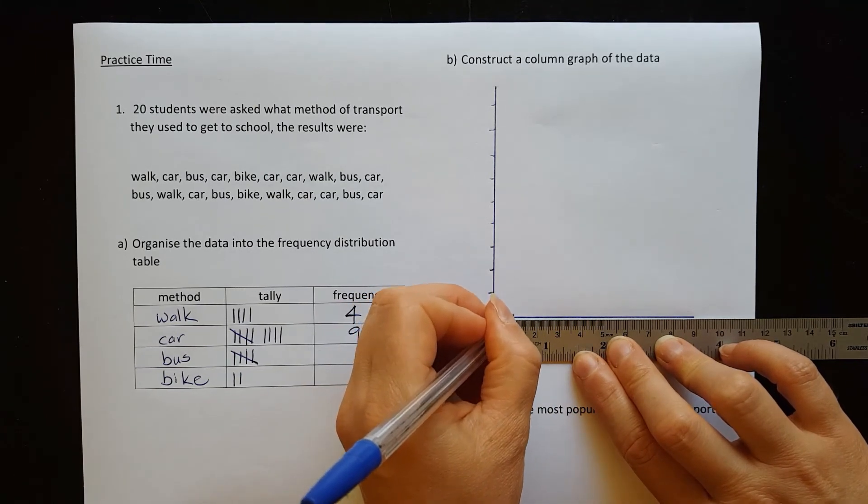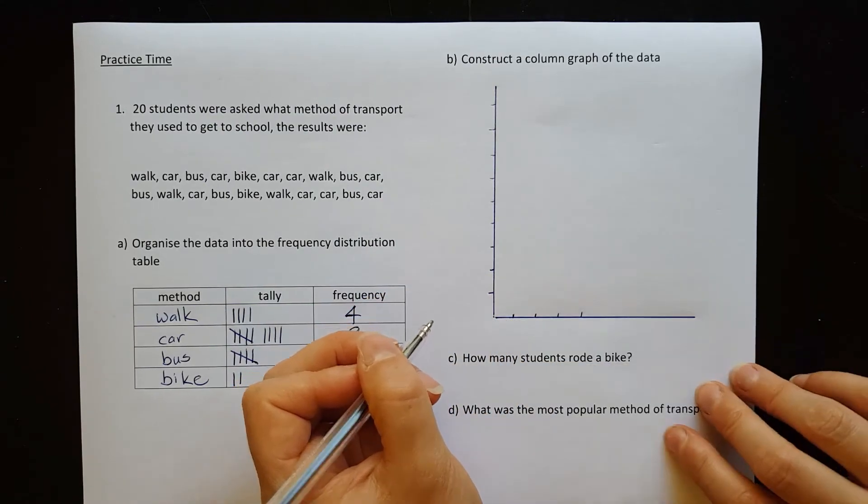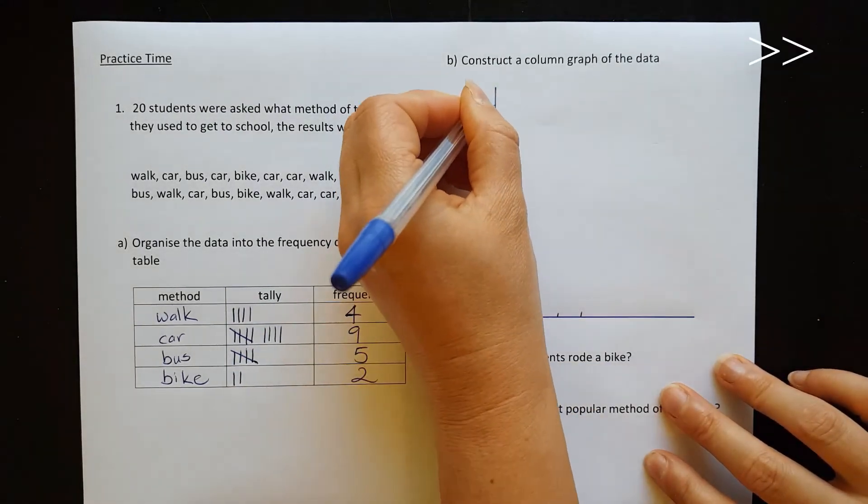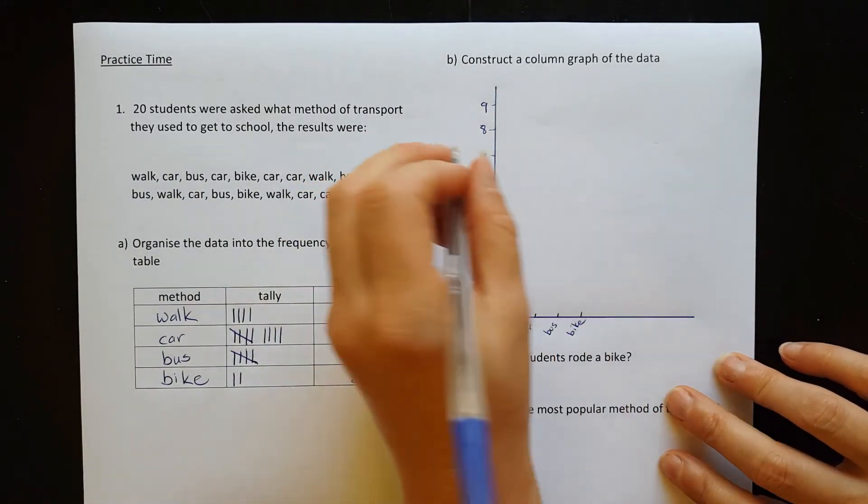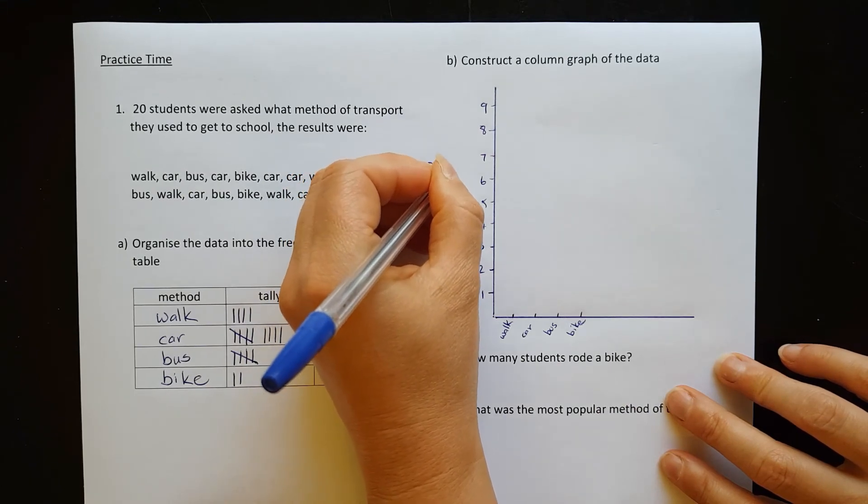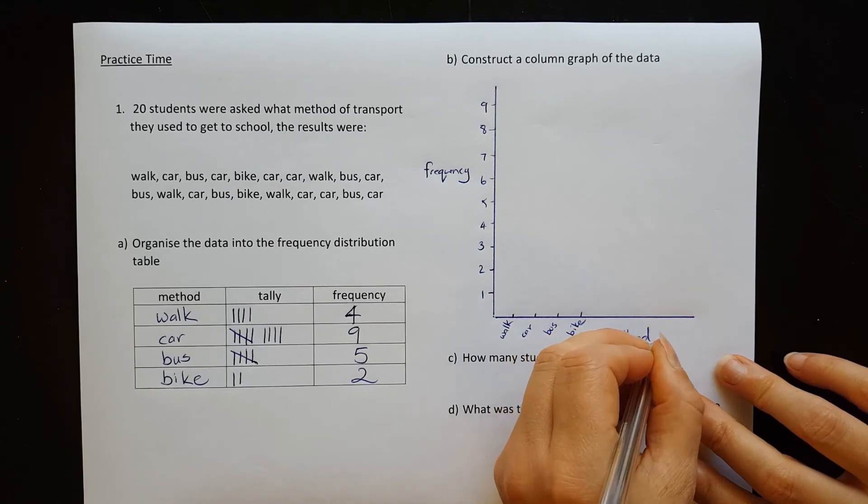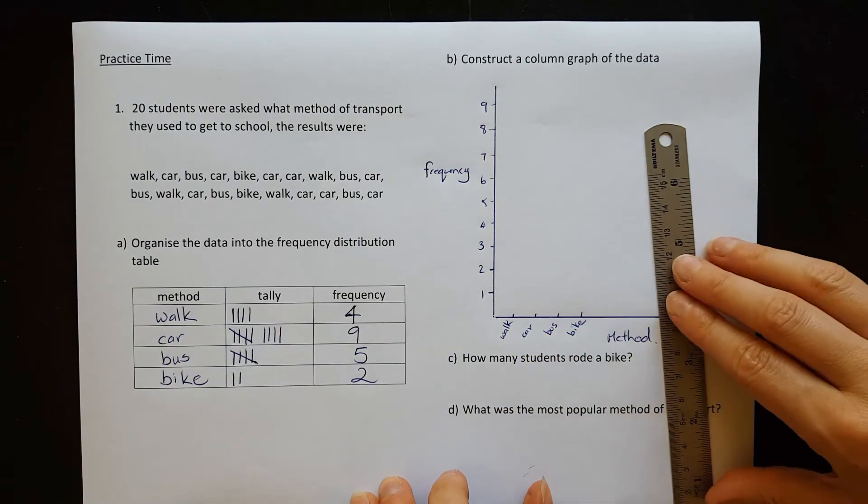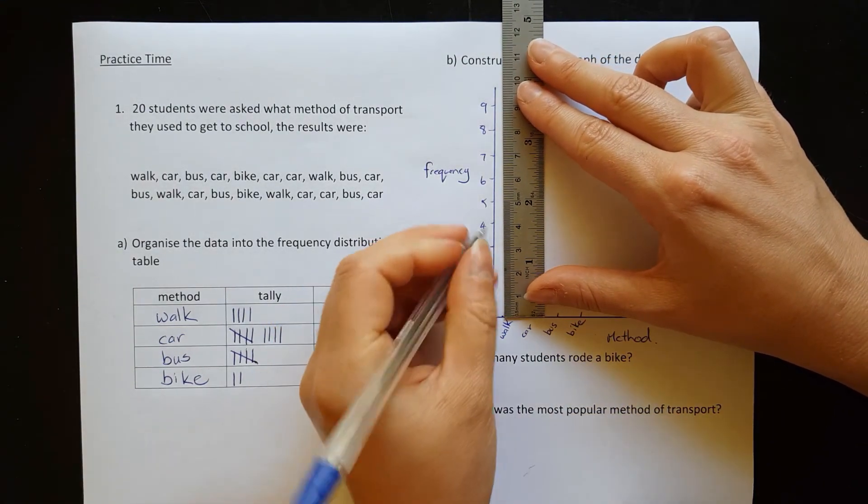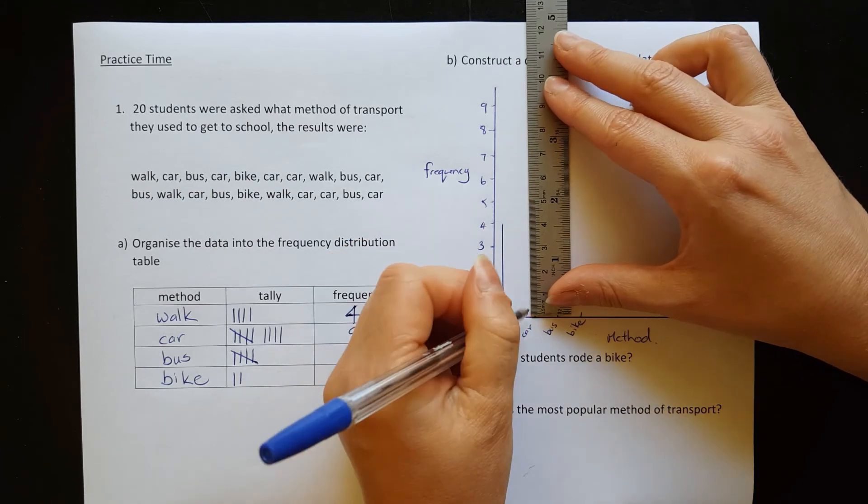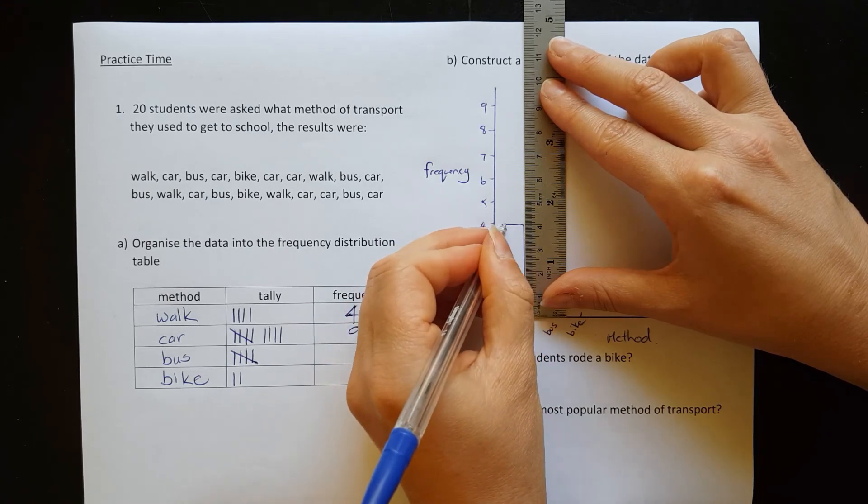Let's write those labels on. Don't forget to label them. So this is the frequency and method of transport. So let's do our columns. There was four students who walked. Remember to start halfway. We go up to the four and then halfway to the next one, up to the four again, flat across the top.